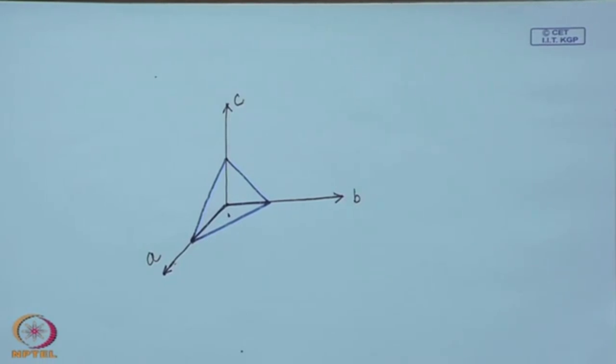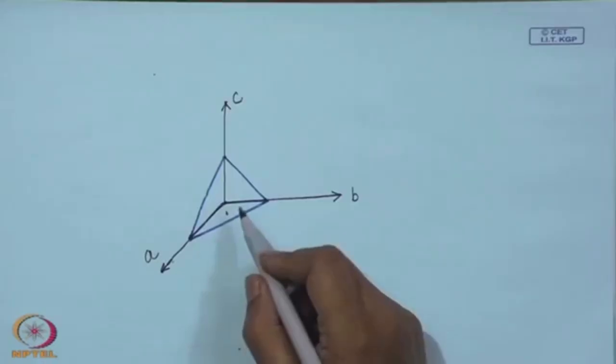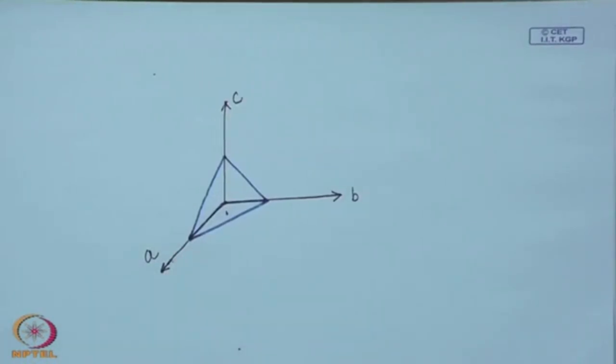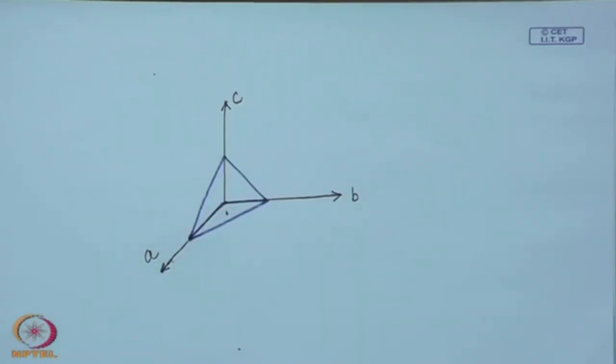Now, what is the force acting on this element — specifically the surface forces acting on this element? For simplicity, we will not write the position x and time t explicitly, since we are thinking of a small element where the position and time are not changing. We will simply write t as a function of n. Let us say the area of the face to which A is normal — that is, the face lying in the B-C plane — has area delta A1.